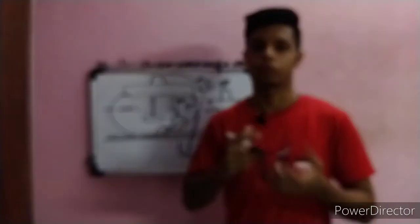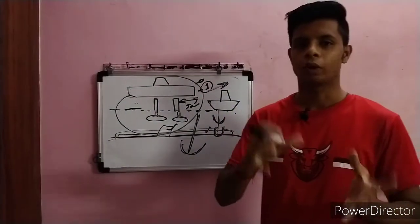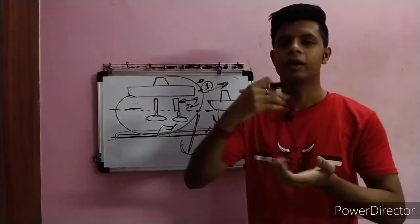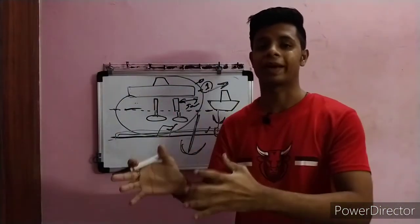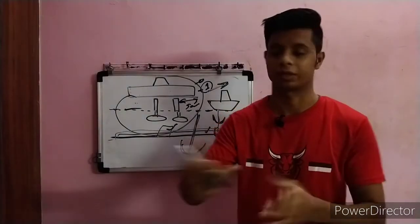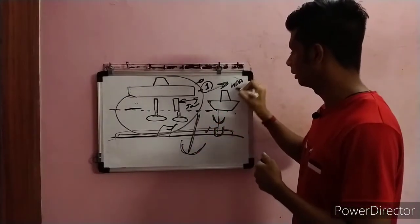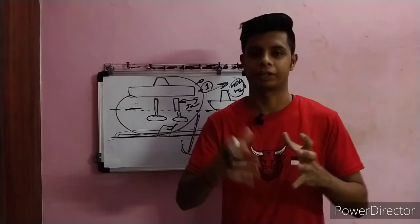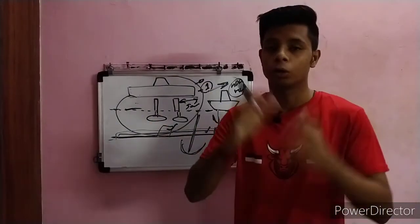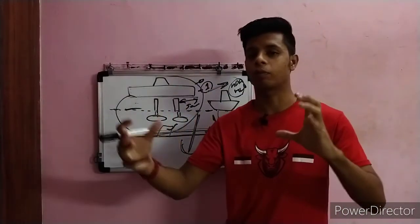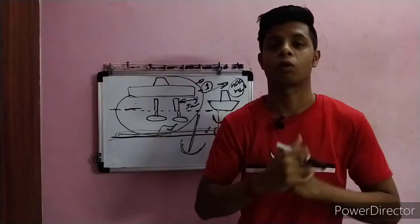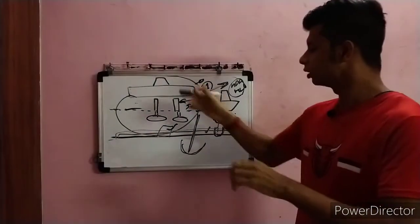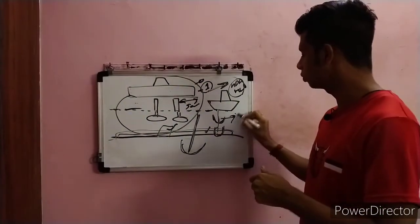Another hazard relates to helicopter access. Personnel often approach an offshore installation by helicopter. If the helicopter is not properly maintained, or if the Helicopter Deck Assistant (HDA) and Helicopter Landing Officer (HLO) are not present to provide landing direction, the helicopter may not know where or how to land safely. This can result in the helicopter colliding with the installation, leading to major fire and explosion hazards.